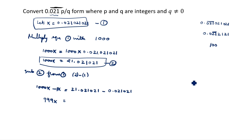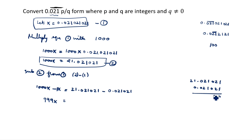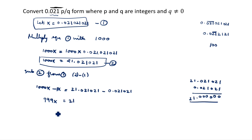On the right side, we subtract: 21.021021... minus 0.021021... The repeating decimal parts cancel out — 1 minus 1 is 0, 2 minus 2 is 0, and so on — leaving just 21. So 999x equals 21.